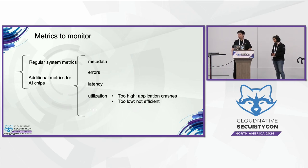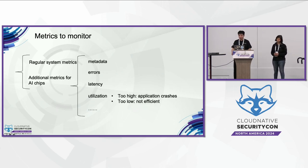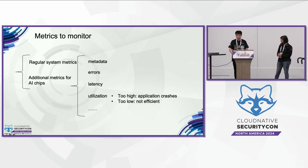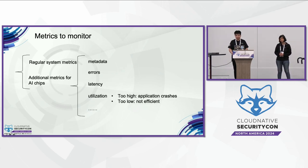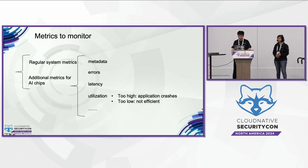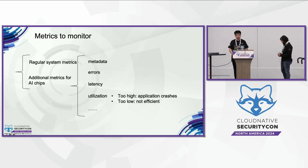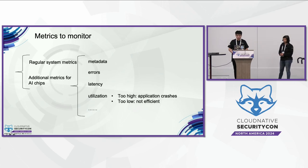First, to monitor AI chips, we need a tool to gather metrics from them. Beyond regular system metrics, we need to monitor additional metrics for AI chips, including metadata, errors, latency, and utilization. In particular, AI chip utilization is an important metric to monitor, because over-high utilization can cause application crashes, which is common in large model machine learning tasks. For example, if the model requires more memory than the AI chip devices can provide, it can lead to out-of-memory crashes. Conversely, if the utilization is too low, it indicates the AI chip is not being used efficiently, so we need to think about how to optimize that.